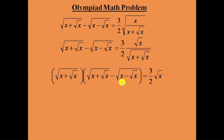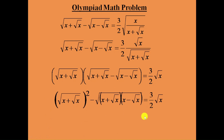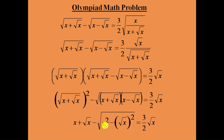Here the second item is square root of x plus square root of x, and here we can see square root of x minus square root of x. Both are having square root, so we can write them as a common square. When we multiply this item with this item it becomes a whole square, and this is of the form (a + b)(a − b). So we can write it as a² − b², which is x² minus square root of x whole square.